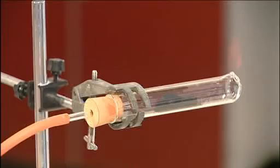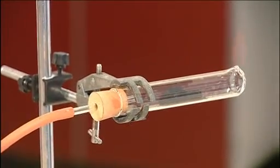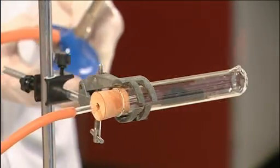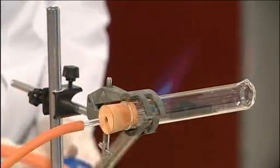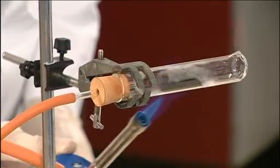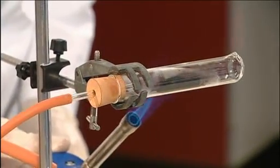Now we heat the copper oxide using a roaring Bunsen flame and using the hottest part of the flame, which is just beyond the blue cone.